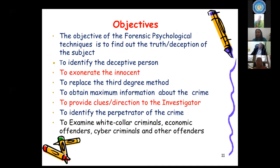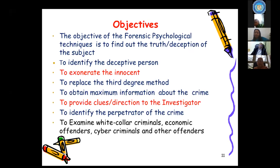The main objective of using forensic psychological techniques is to find out truth and deception of the subject and to identify deceptive persons. It is very important to exonerate the innocent. When an investigating officer has 10 suspects, with the help of these techniques he can eliminate innocent persons. The IO can also get maximum information about the crime, get direction in the investigation, identify the perpetrator, and these techniques are especially useful for white-collar crime, economic offenses, and cyber cases.